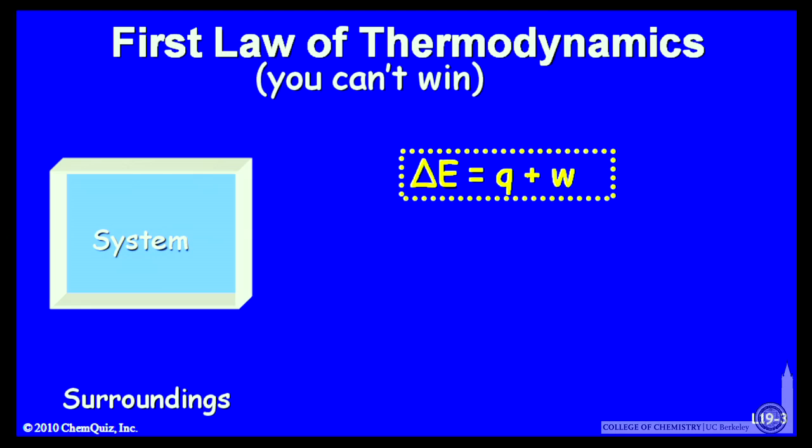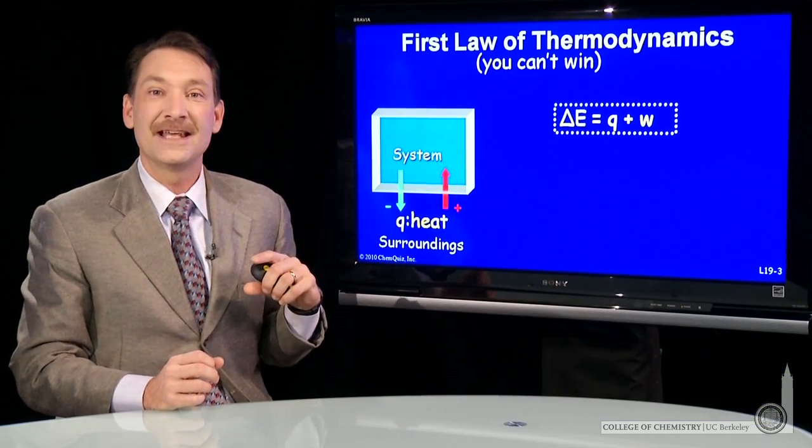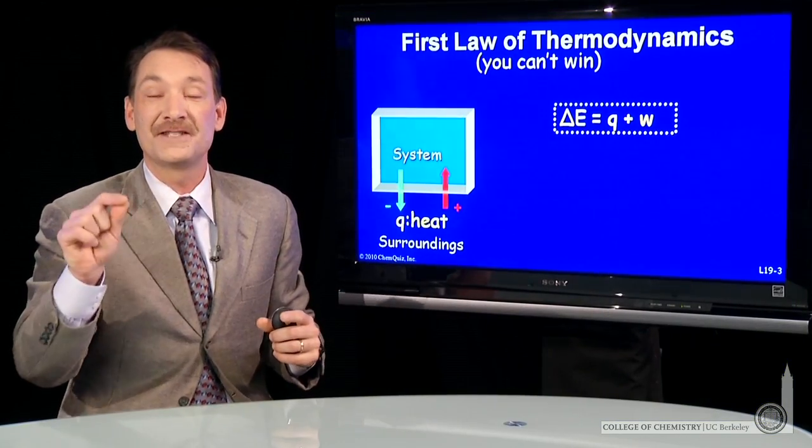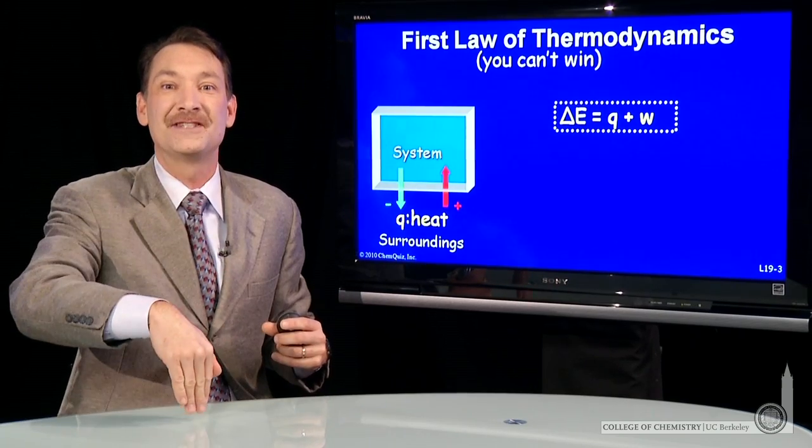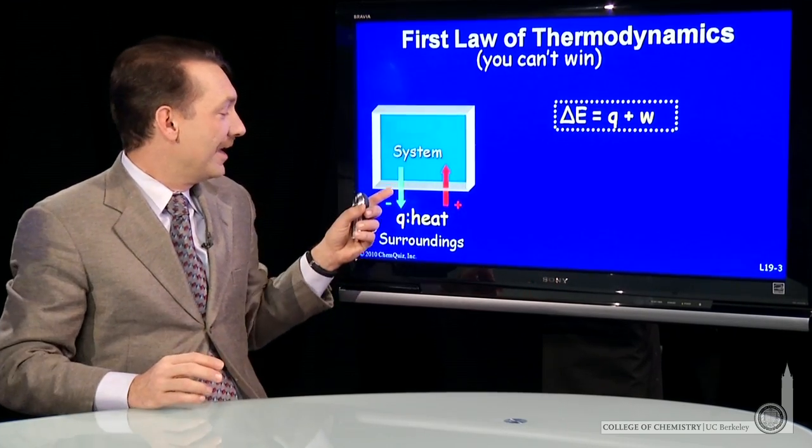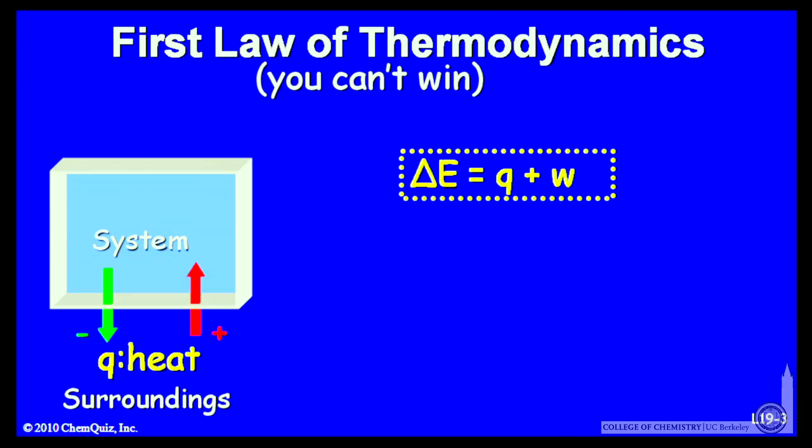Let's look at how that works. Say heat, which I give the symbol Q, if that leaves the system, that would tend to lower the energy of the system. So we give heat that leaves the system the negative sign. We call that exothermic, heat that leaves the system. A negative sign allows us to use this equation naturally. That is, a negative heat naturally lowers the energy of the system.